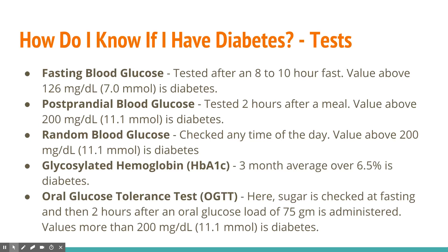There are a number of blood glucose investigations done at different times of day, and a combination is needed for diagnosis. The fasting blood glucose is checked after an 8-to-10-hour fast: below 100 mg/dL is normal, while above 126 mg/dL (or 7 mmol/L in some countries) indicates diabetes. A postprandial blood glucose is tested 2 hours after a meal, and values above 200 mg/dL are indicative of diabetes. A random blood glucose above 200 mg/dL at any time of day also suggests diabetes, though other investigations are required.